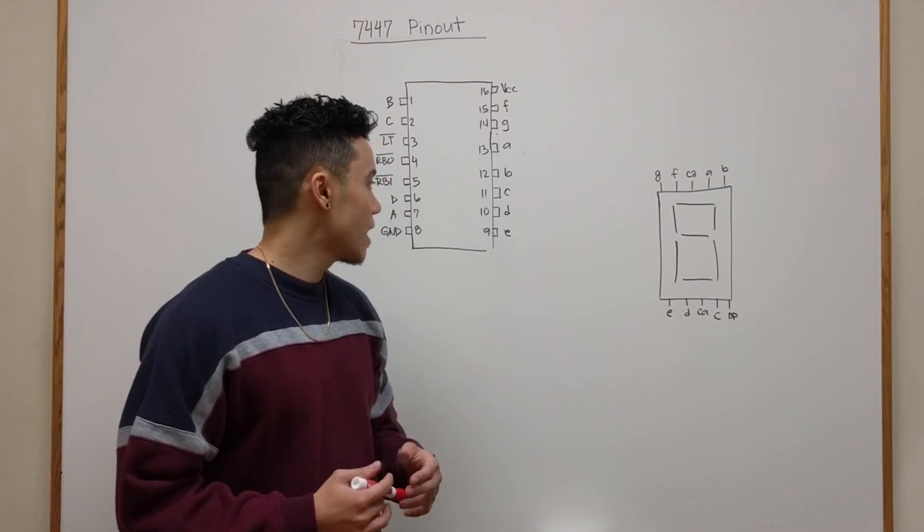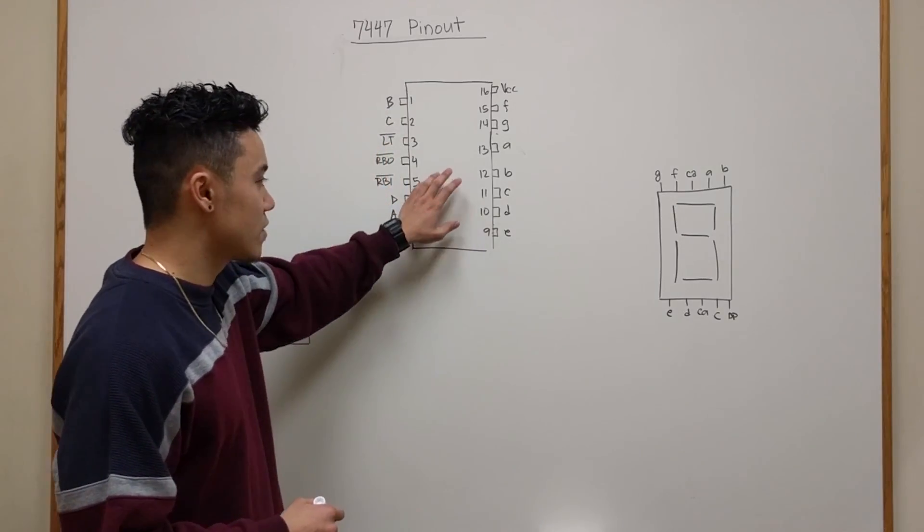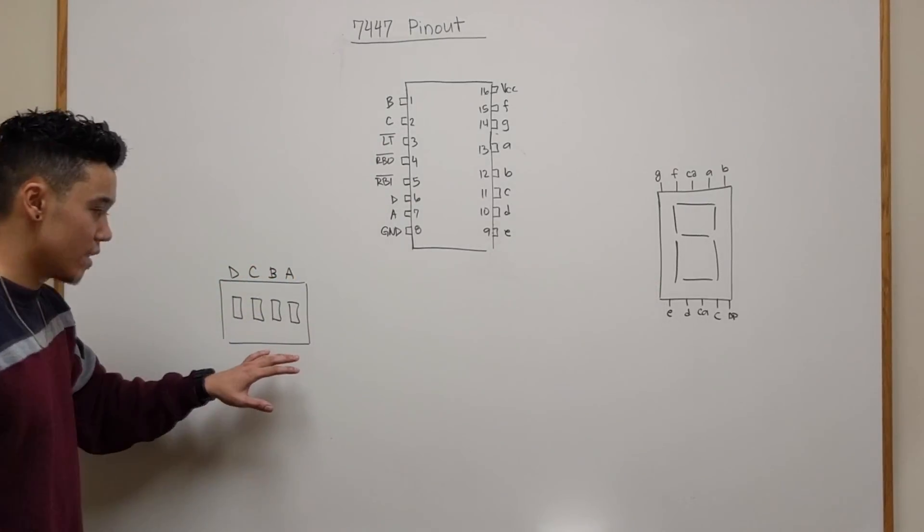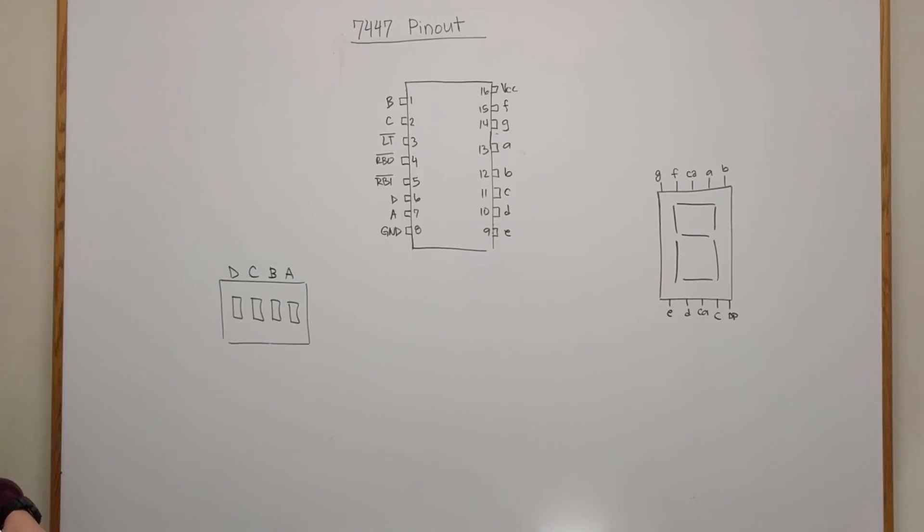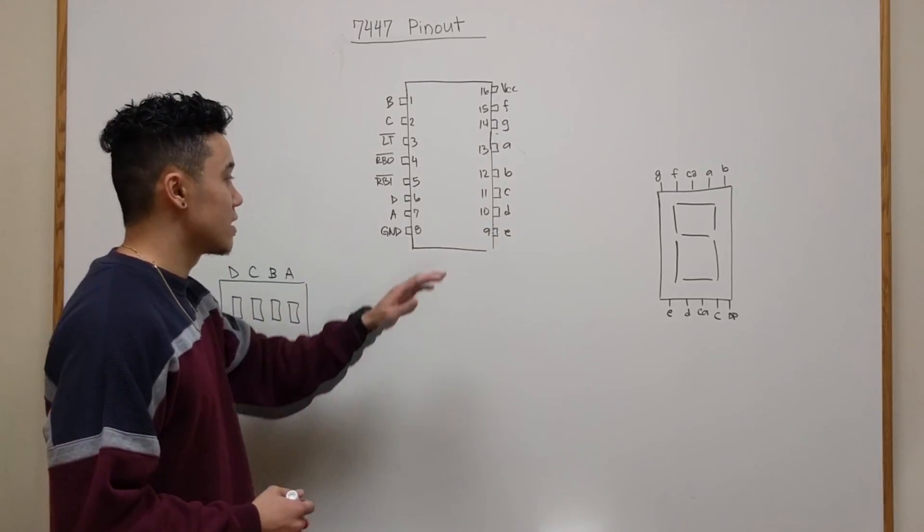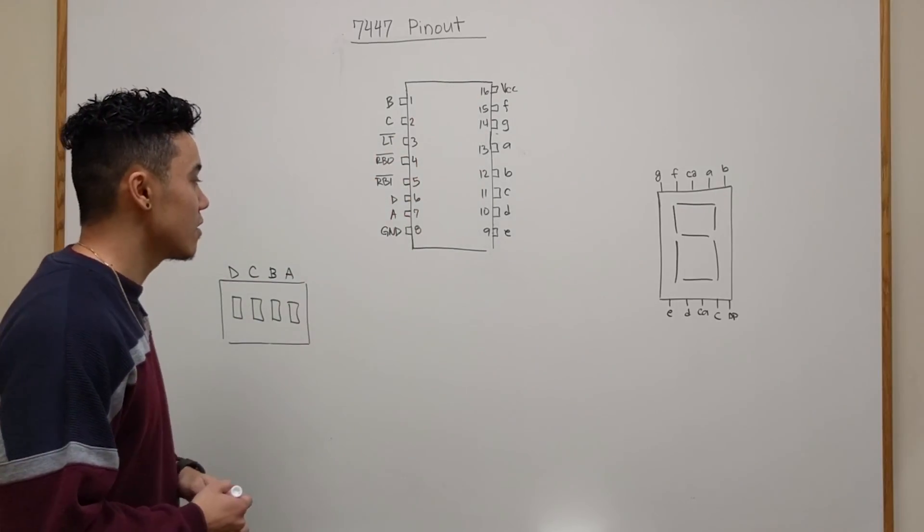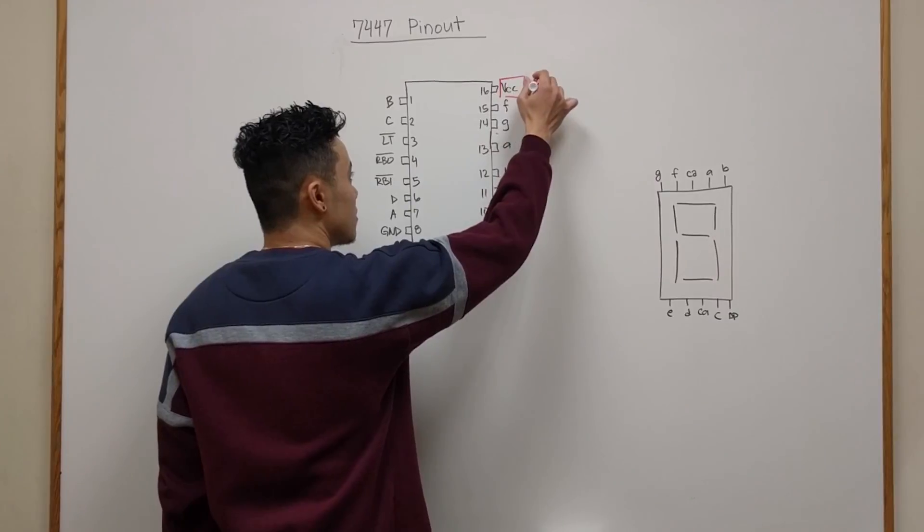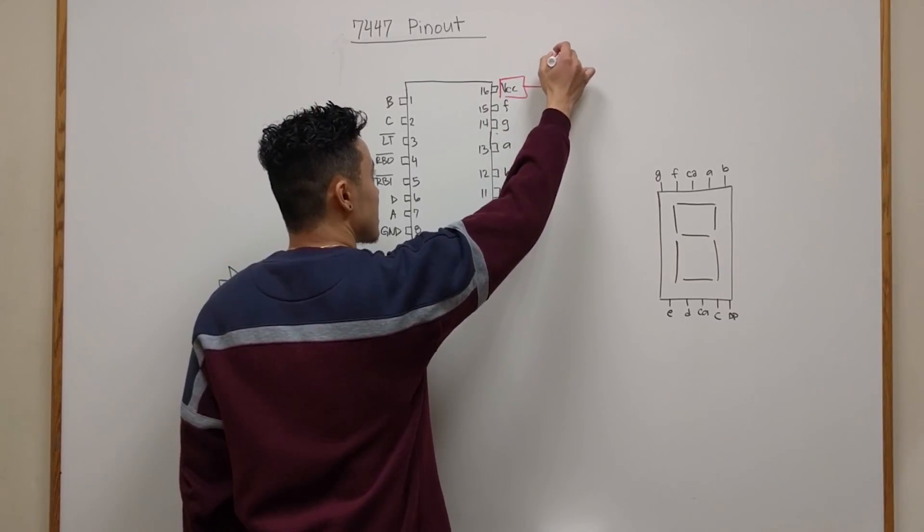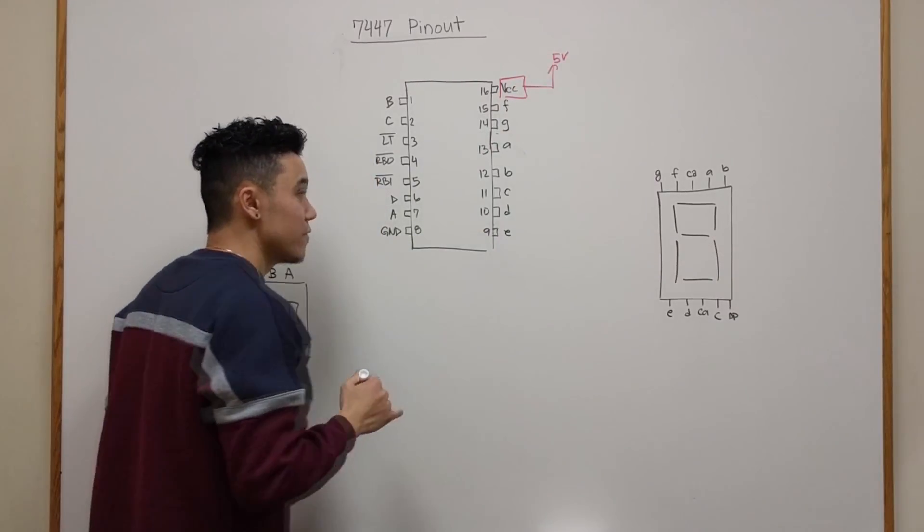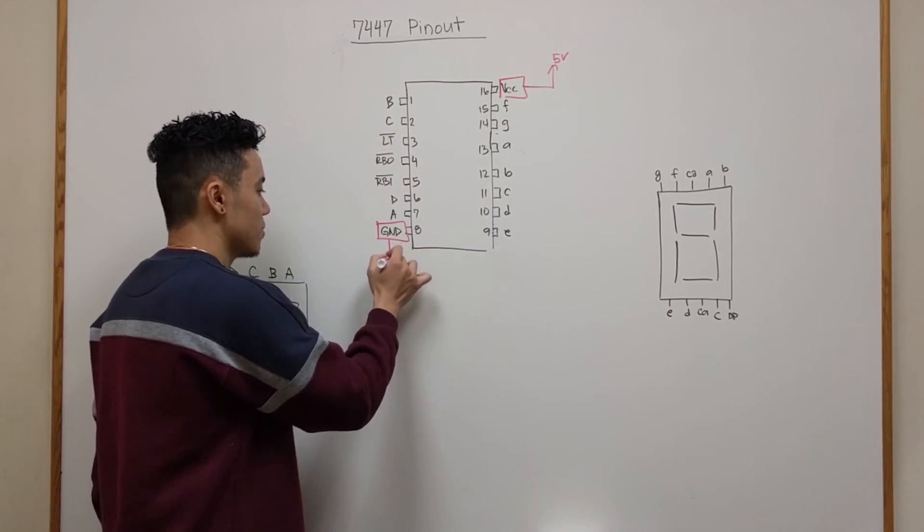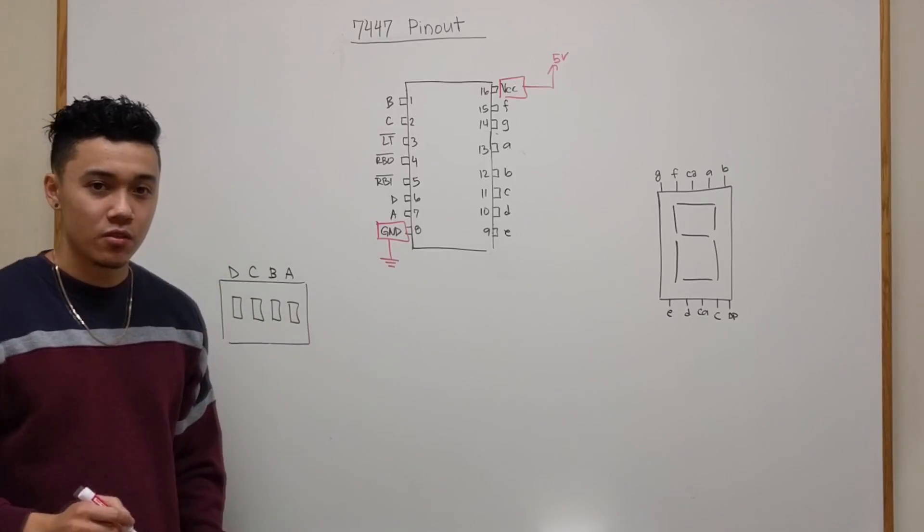As you can already see I've already drawn the 7447 chip as well as the 7-segment display and our four input switches here. We'll start off with the most obvious which is VCC and ground. Your VCC is going to be connected to your power source, in this case the 5 volt power source, and of course your ground is going to be connected to ground.